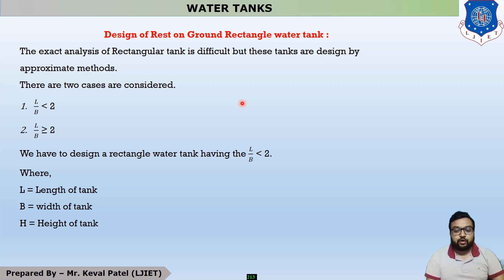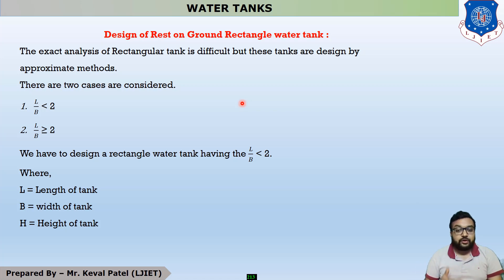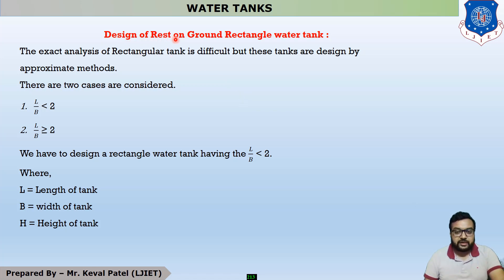Now the second type of water tank is the rectangular water tank which rests on the ground. There will be 50% similarity between the rest-on-ground and the underground water tank because both tanks have a rectangular shape. Now we will start with the design of the rest-on-ground rectangular water tank.